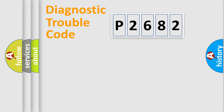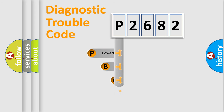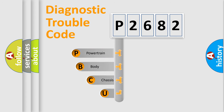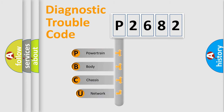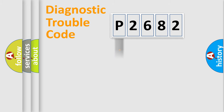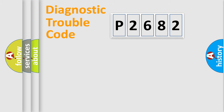Let's do this. First, let's look at the history of diagnostic fault code composition according to the OBD2 protocol, which is unified for all automakers since 2000. We divide the electric system of automobile into four basic units: Powertrain, Body, Chassis, and Network.